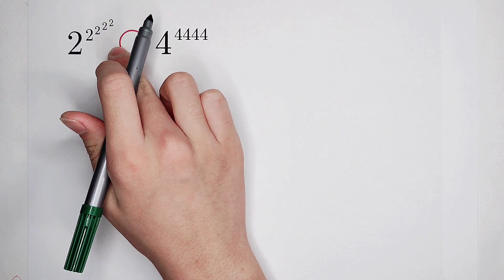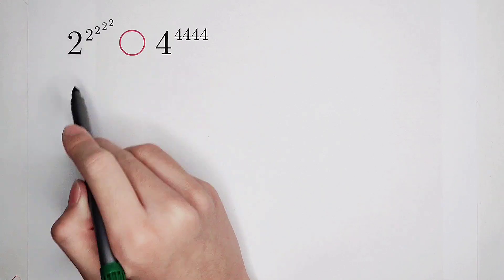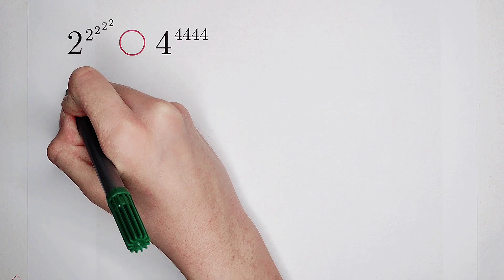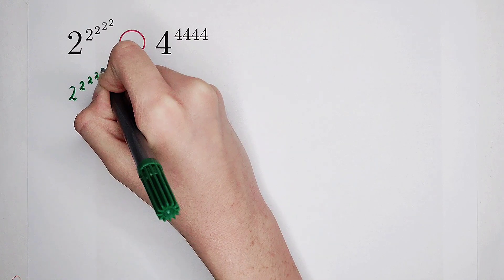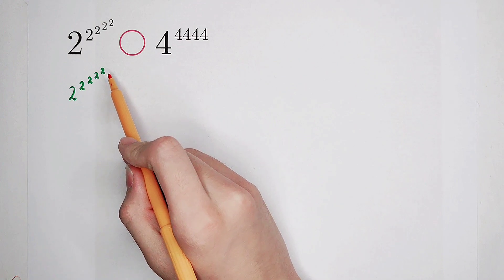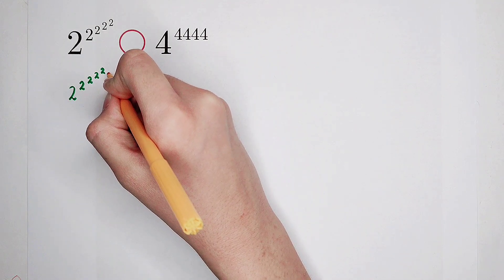First, the left side is a little bit horrible, isn't it? Four exponents. So first, you have to know one thing about the calculation: how should we calculate this? From the bottom to the top, or from the top to the bottom? Of course, from the top to the bottom.